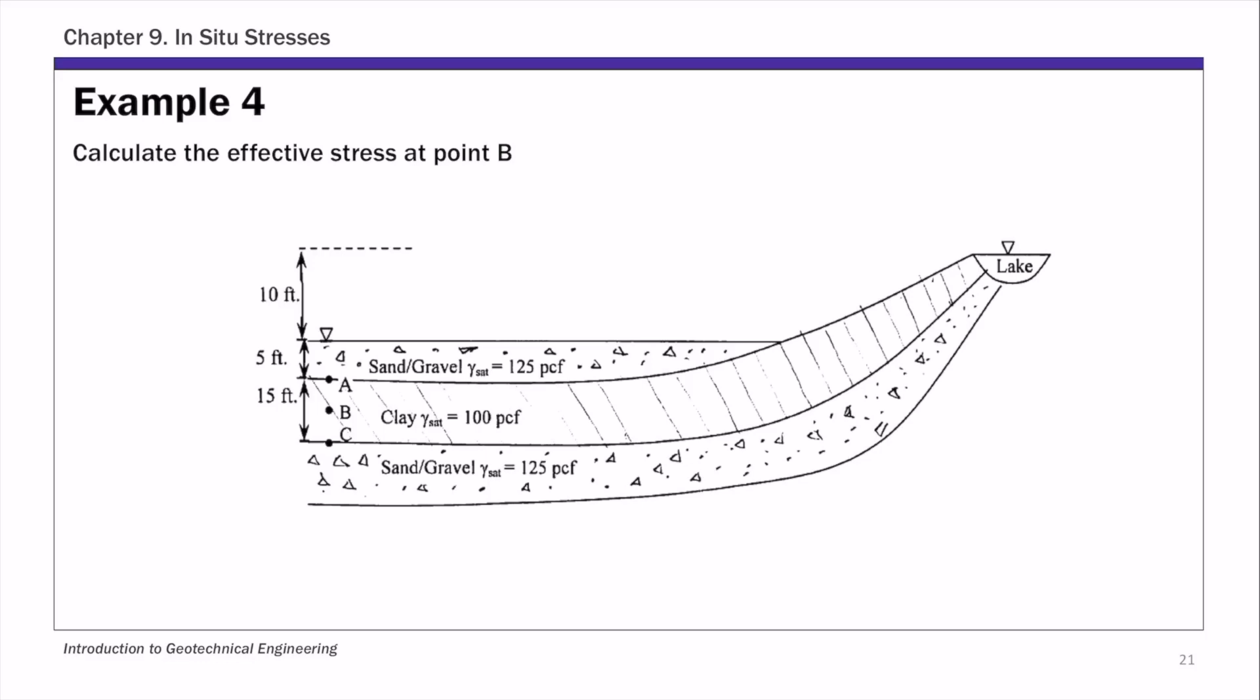Hi everyone, this is example 4 of chapter 9 on effective stress. In this example we are given a more realistic soil profile. We have a sand layer on top, a clay layer in the middle, and another sand gravel layer at the bottom. We are asked to determine the effective stress at point B, which is located at the middle of the clay layer.